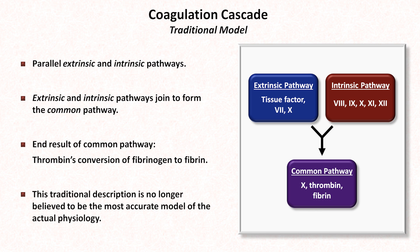Unfortunately, this traditional description is no longer believed to be the most accurate model of the physiology. It nonetheless is still widely taught in textbooks and university lectures. It's not that the traditional model is literally wrong, but rather that it is an oversimplification whose division into these distinct extrinsic and intrinsic pathways is artificial. In addition, it ignores the distinct phases of coagulation and has not typically included a thorough discussion of essential multi-component complexes.